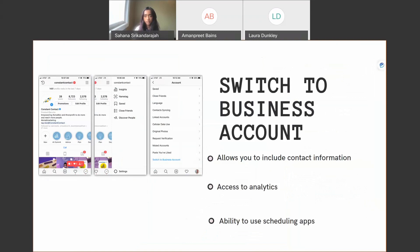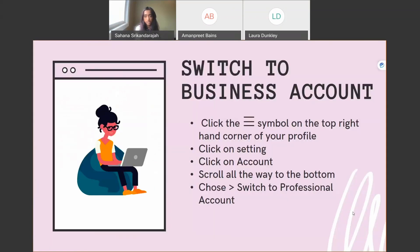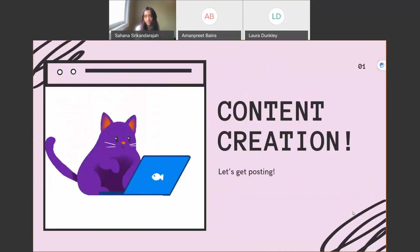I would highly recommend switching to a business account. It allows you to include contact information, gives you access to analytics, and enables the use of scheduling apps. When you first create an account, Instagram makes it a personal account by default, but switching to a business account gives you several more benefits. The steps to make that switch are included in the presentation slides — feel free to use them as a reference. Now let's get into content creation.